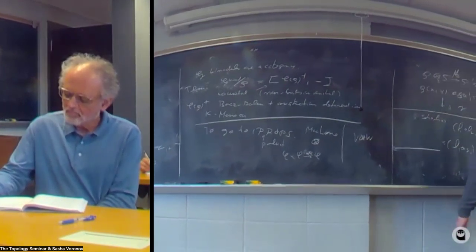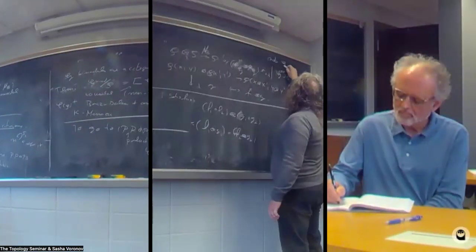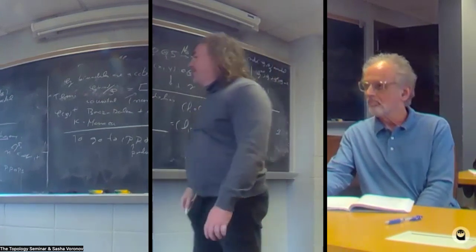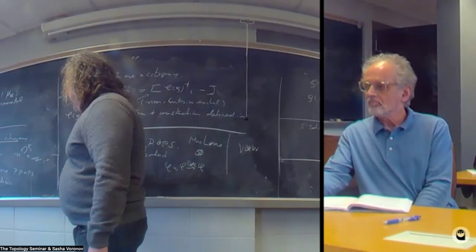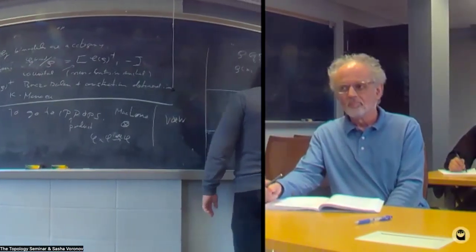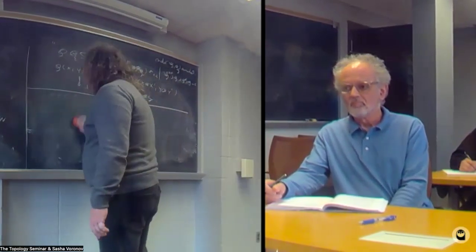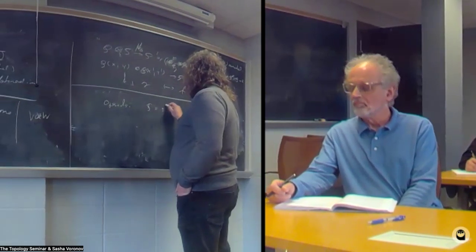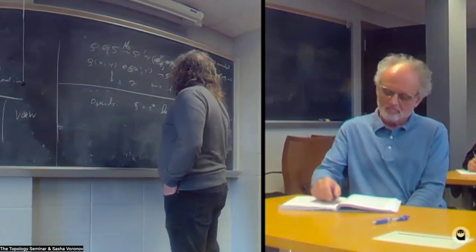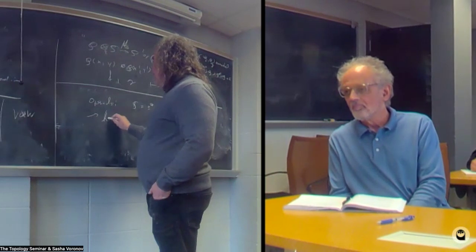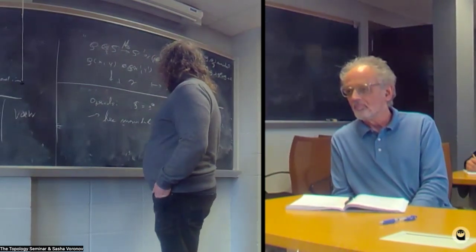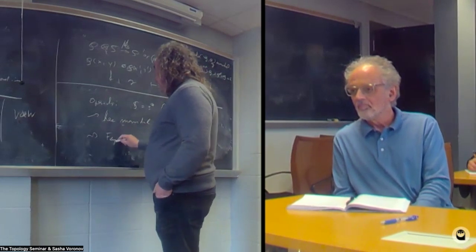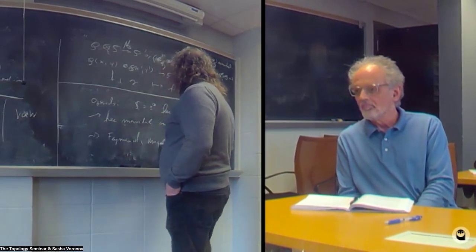So now you know what a prop is: it has objects the natural numbers, morphisms between them, and the natural numbers have a monoidal structure given by addition. For operads, you need to figure out that S is the free monoidal on the trivial category. The notions you really get are Feynman categories and the unique factorization categories I mentioned.